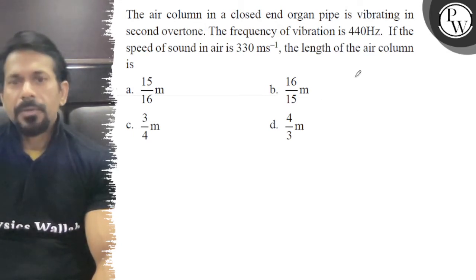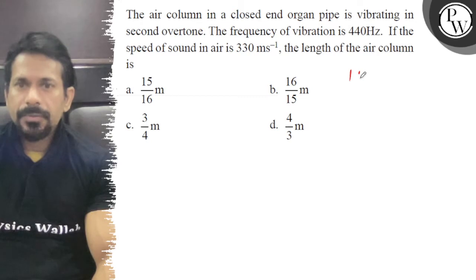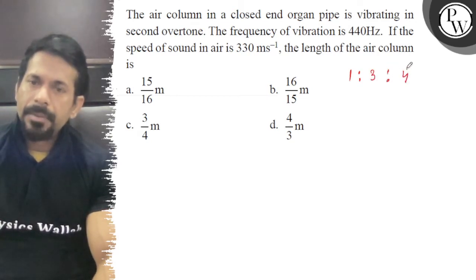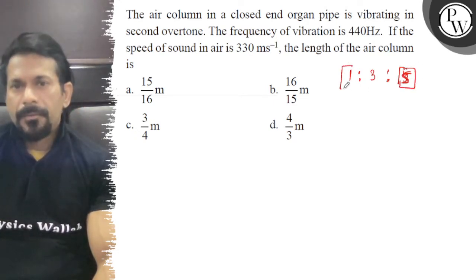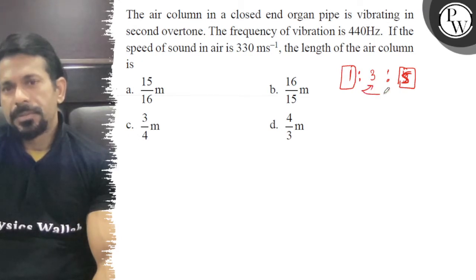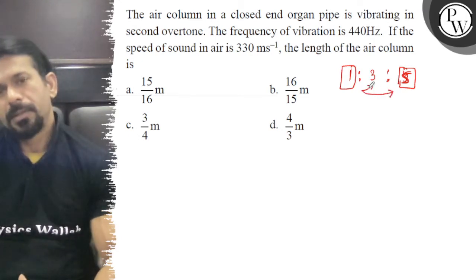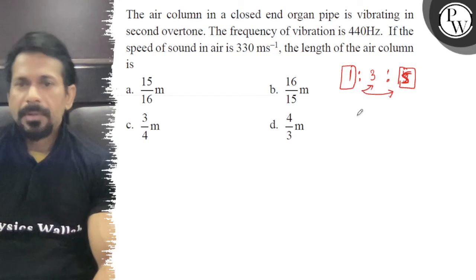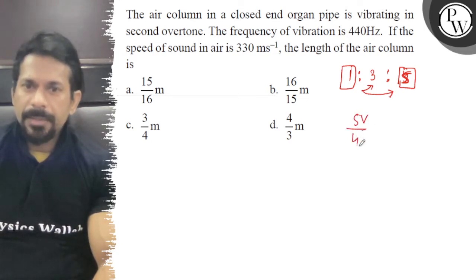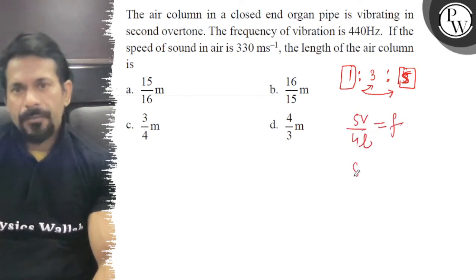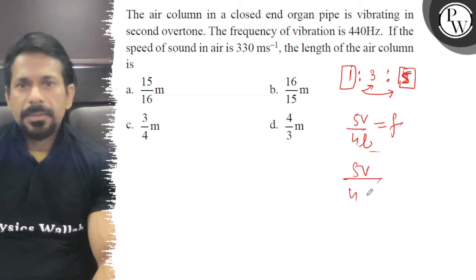For the closed pipe, we need to find the length using the second overtone. The frequency of the second overtone is 440 Hz.